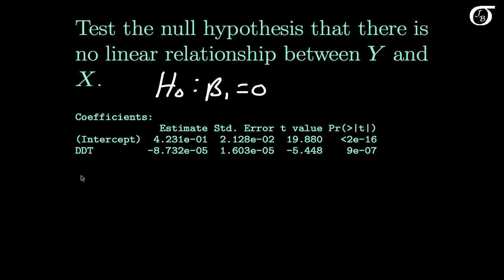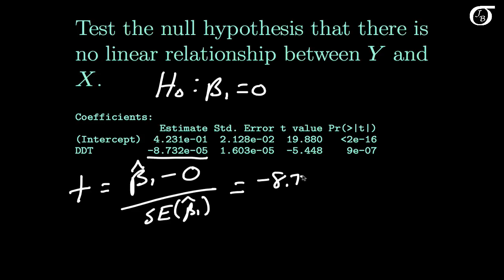To carry out that test we use a t-test. And our t-test is our sample slope minus the hypothesized value, which is 0 in this case, over the standard error of our sample slope. And these values are found in the output. So our beta 1 hat is given right here as minus 8.732 times 10 to the negative 5.